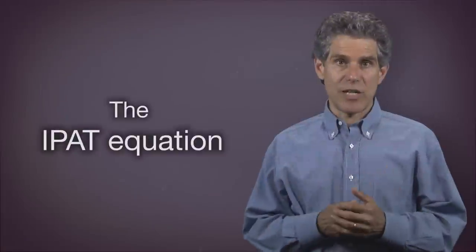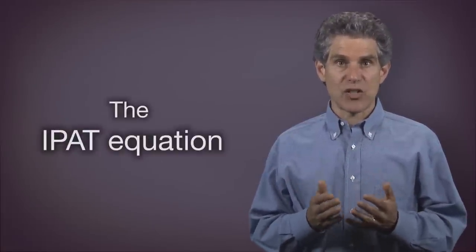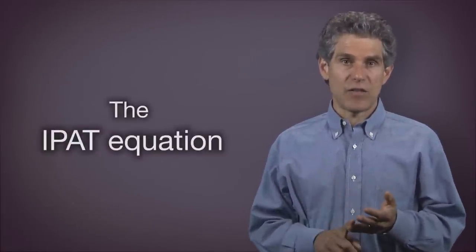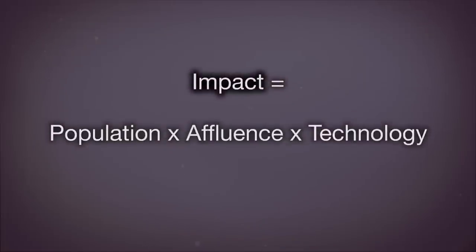The IPAT equation is a way to represent human impact as a function of population and affluence. The formula is: impact I equals population P times affluence A times technology T. We don't actually multiply out those factors, but they do contribute together to give you an indication of the impact.